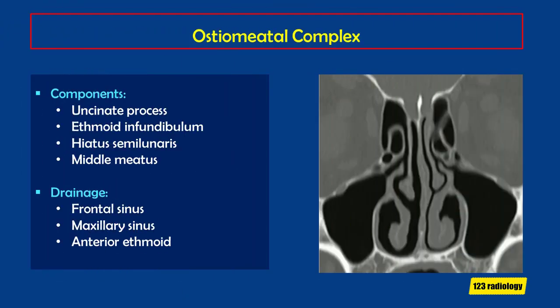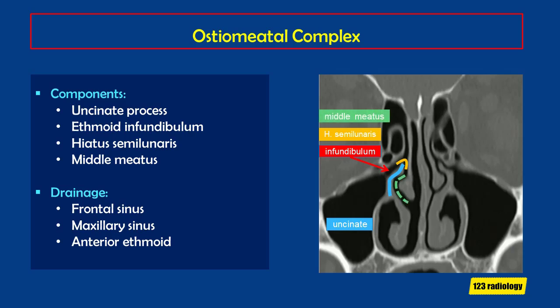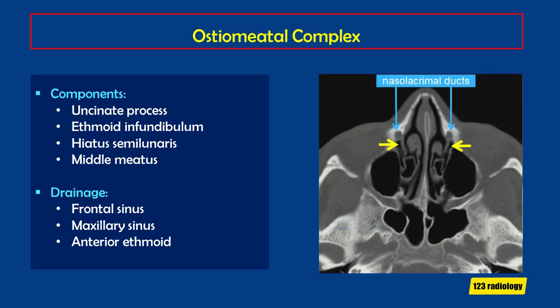The ostiomeatal complex is depicted well on coronal images. The landmark important to recognize is the centrally located uncinate process — if you find the uncinate process, you are close to the ostiomeatal unit. The air space lateral to the uncinate process is the ethmoid infundibulum. Right at the tip of the uncinate process is the hiatus semilunaris. The middle meatus is medial to the uncinate process and lateral to the middle turbinate. The dominant ethmoid air cell above the uncinate process is the ethmoid bulla. Importantly, the uncinate process anteriorly has an attachment to the nasolacrimal duct, so the nasolacrimal duct can be at risk during resection of the uncinate process.